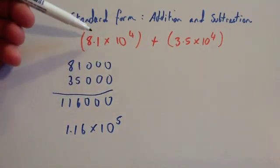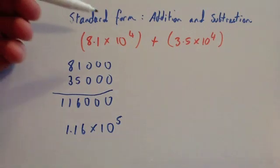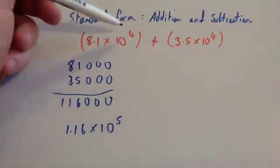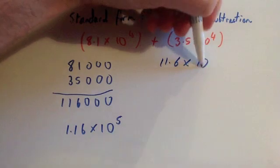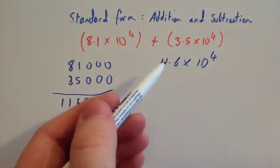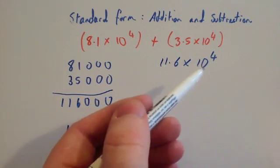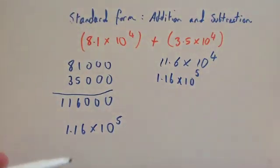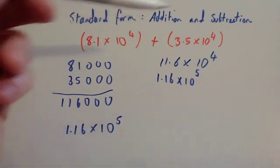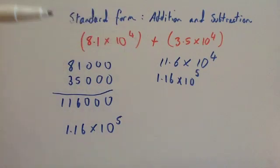Alternatively, notice that if you do 8.1 plus 3.5, that equals 11.6. So you can just add the two numbers at the front if the powers of 10 are exactly the same, giving 11.6 times 10 to the power of 4. Unfortunately this isn't in standard form because it needs to be a number between 1 and 10, so you make this number 10 times smaller and this number 10 times bigger, giving 1.16 times 10 to the power of 5. The two answers are exactly the same.